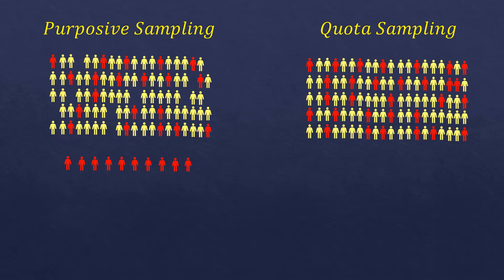Now let's go to quota sampling. We'll use the same population. Quota sampling applies to a different kind of study — for example, you want to know who sleeps longer, males or females. For quota sampling, the study is not necessarily limited to one characteristic. It's still applicable to any kind of characteristic; it's just that you choose the proportion of the sample according to the characteristic.